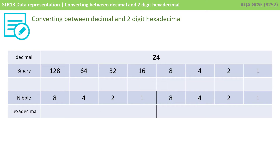Let's take a different number now — let's take 24. Again, the first thing you do is write it out in binary. So there's 24 in binary — it's a 16 plus an eight.